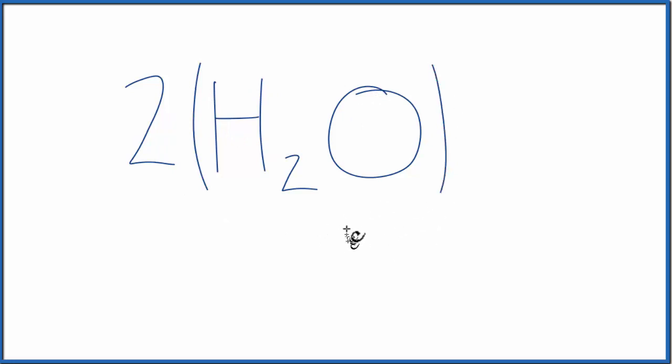So if you wanted to find the number of atoms in two H2O, it would be two times the two hydrogen, that's four, plus two times the one oxygen, that's two. So there'd be six total atoms in two H2O. Just double what we got before. That makes sense because we have a two that applies to the whole H2O molecule.